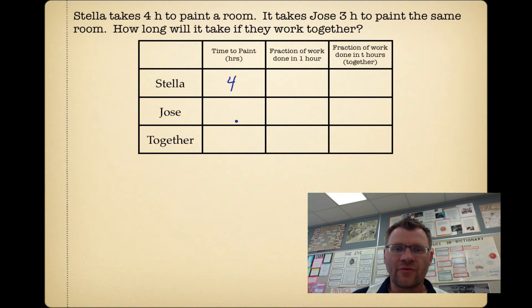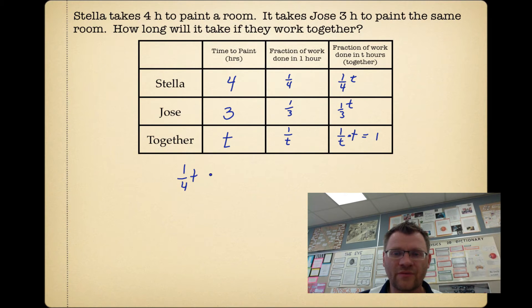So Stella takes 4 hours to paint the room, Jose takes 3 hours, and together we're going to call that t. If Stella takes 4 hours to paint the room, then the fraction of the work done in 1 hour is going to be 1/4. Jose would get 1/3 of the room painted in 1 hour. And together, they would get 1/t painted in 1 hour. The fraction of the work done in t hours is going to be 1/4·t, 1/3·t, and 1/t·t which is just 1. So that means the fraction of the work done together, 1/4·t plus 1/3·t equals 1.